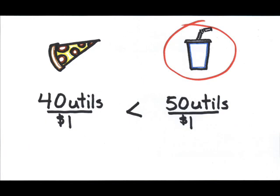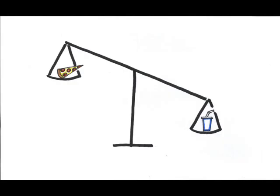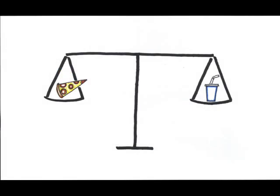But hold on a minute. Once I buy the Coke, the marginal utility of Coke falls, and then what? Eventually, as the consumer continues the pattern of choosing the greatest marginal utility per dollar spent, an equilibrium will be reached.